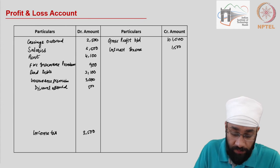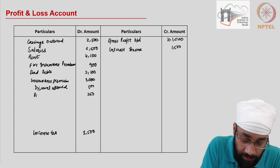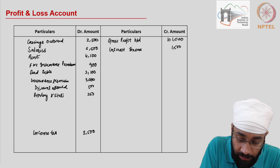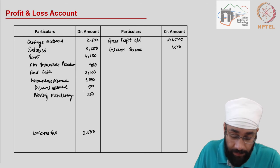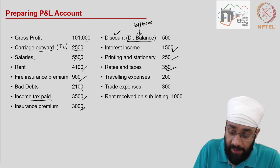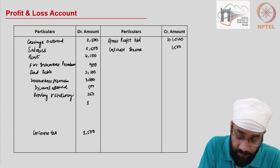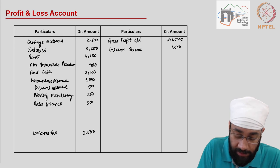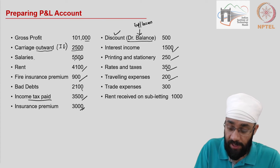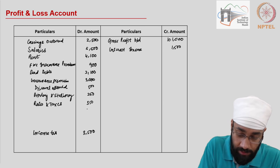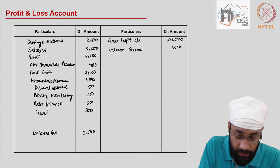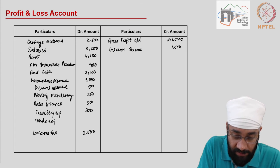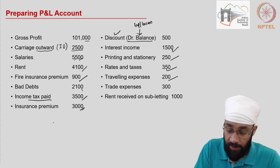Printing and stationery: two hundred fifty. Rates and taxes: three hundred fifty. Traveling expenses: two hundred. And then you have trade expenses as well — the amount is three hundred.